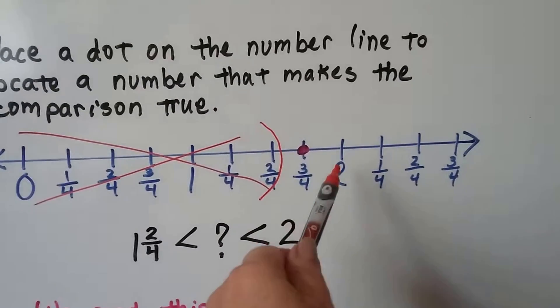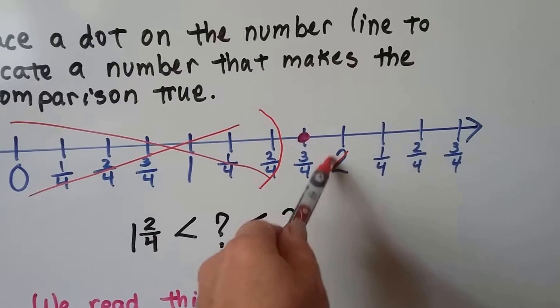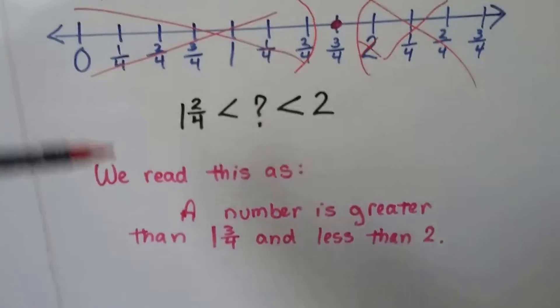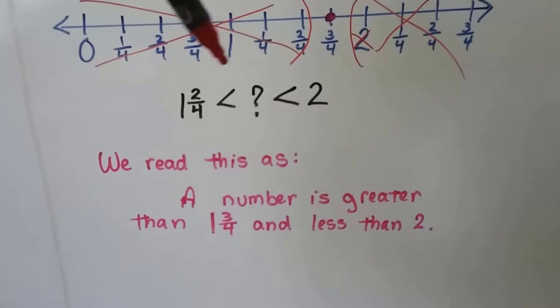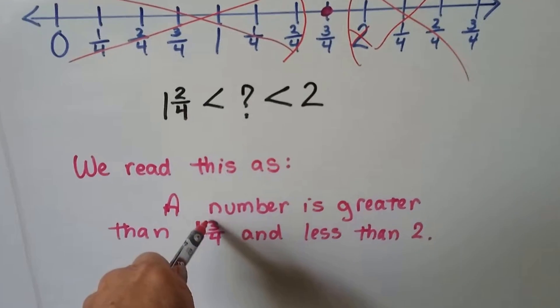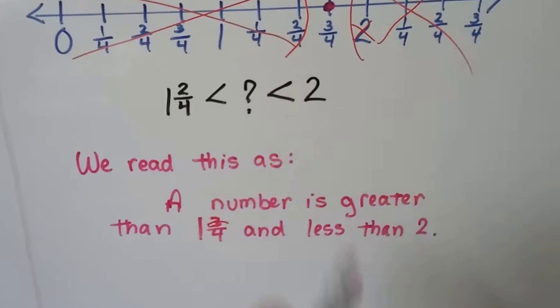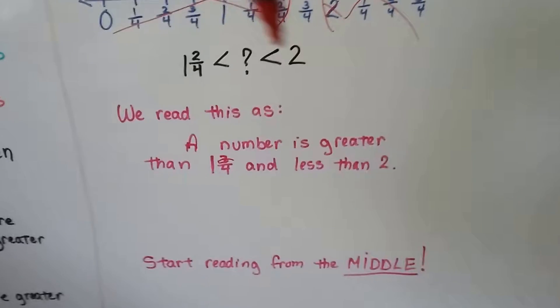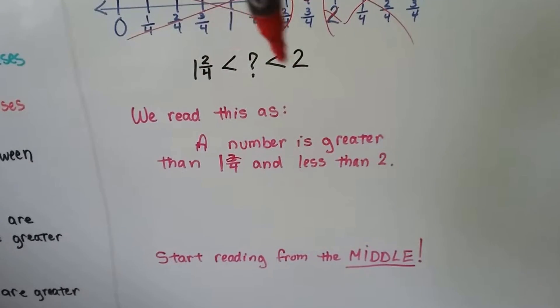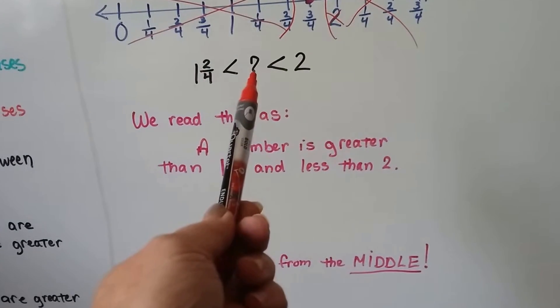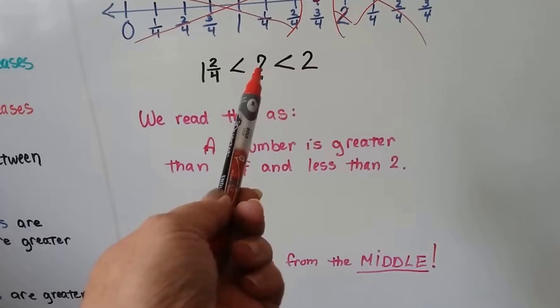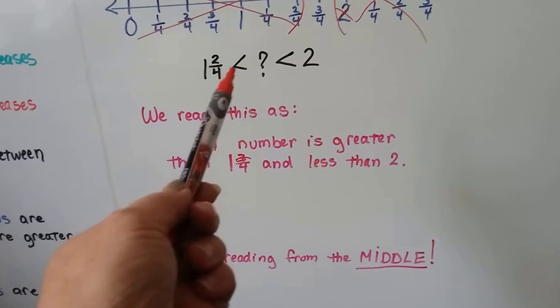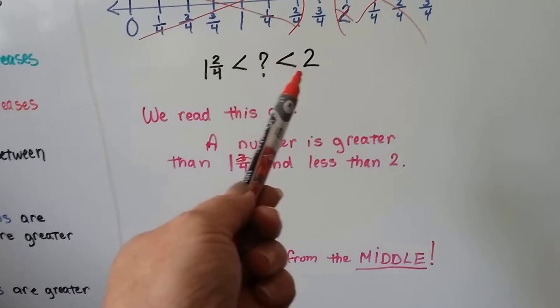Because it's greater than that. And it says it's less than 2. Well, if it's less than 2, it doesn't include 2. So all of these are not counted. The other thing that's left is 1 and 3 fourths. And we would read this comparison as a number is greater than 1 and 2 fourths and less than 2. So you start reading it in the middle. Whenever you see these comparisons and it's got two comparison signs, start reading in the middle.